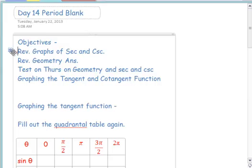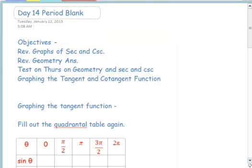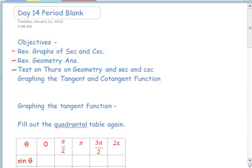I only plan on this being a few minutes long. What we did in class was we reviewed our graphs of secant and cosecant from last night. We talked about the geometry answers for our geometry pre-test that we did last week. We're having a test on that later this week on Thursday, and we'll be graphing the secant and cosecant transform functions, as well as what we do today with graphing tangent and cotangent.